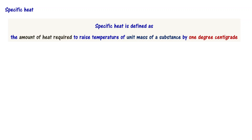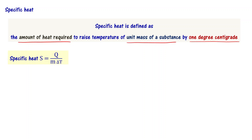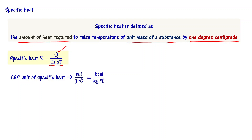Now to summarize: specific heat is defined as the amount of heat required to raise the temperature of unit mass of a substance by one degree centigrade. The mathematical equation is S equals Q divided by M times delta T, where Q is heat supplied, M is mass of the substance, and delta T is change in temperature. The CGS unit is calorie per gram per degree centigrade, also written as kilocalorie per kg per degree centigrade, and the SI unit is joule per kg kelvin.